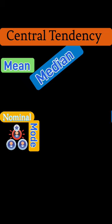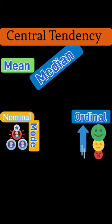For ordinal data, you can get the mode and the median of such data, but the best measure of central tendency is the median.